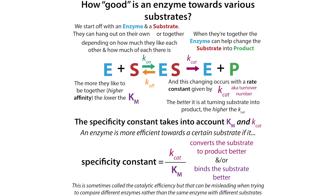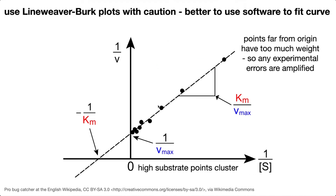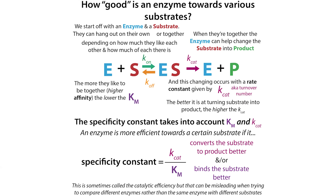There are various caveats, including Lineweaver-Burk plots which have some problems, and the fact that you have to be measuring under very specific conditions for the equations to work. Also, not all enzymes actually obey Michaelis-Menten kinetics. You can have things like allostery, as we see with hemoglobin binding oxygen, where binding to one subunit influences binding to another, giving all these complicated enzymatic schemes.